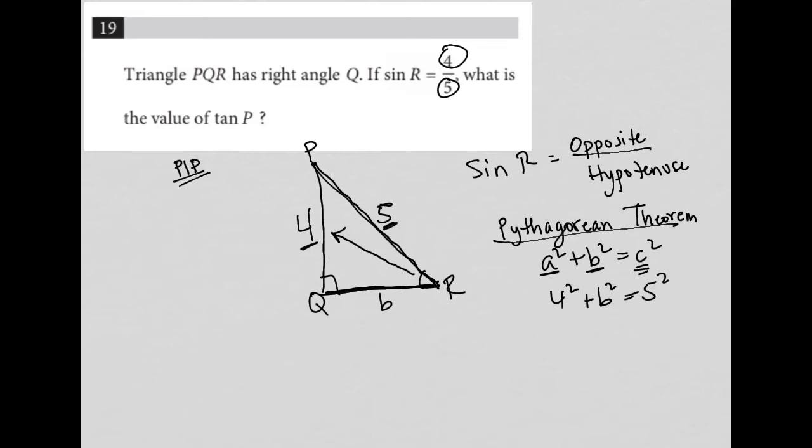So this becomes 16 plus B squared equals 25. I subtract 16 from both sides here, and I'm left with B squared equals nine. Square root both sides, and I get B equals three. So this side length here is equal to three.